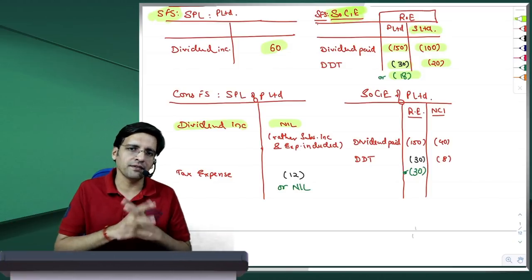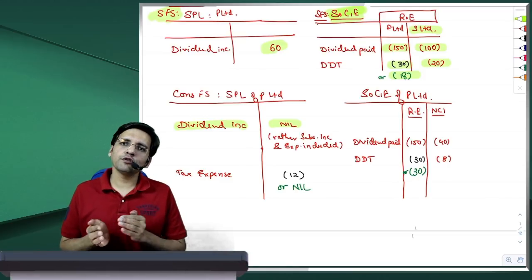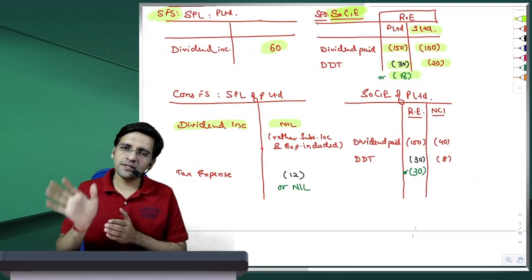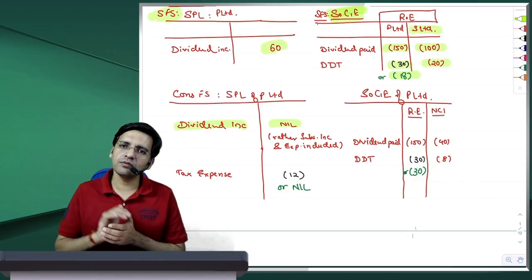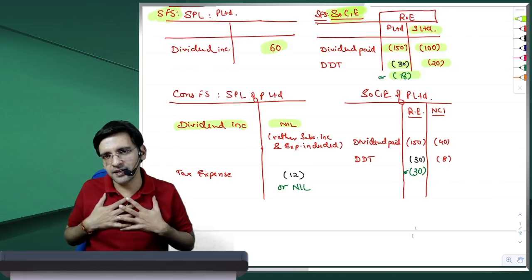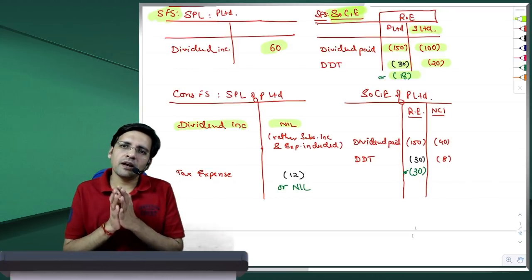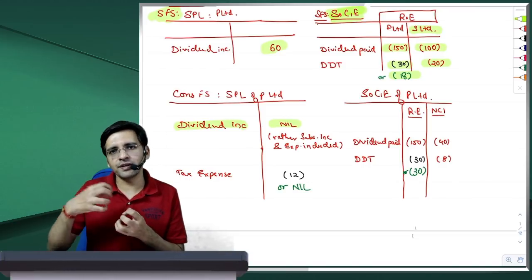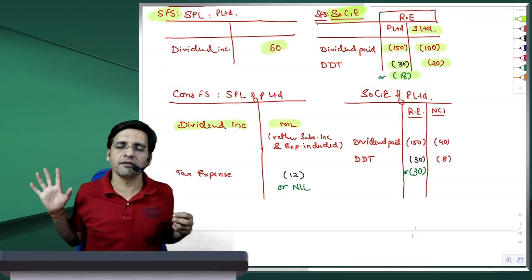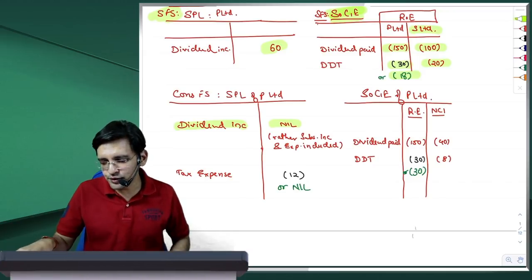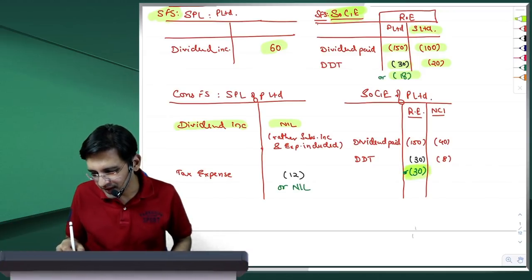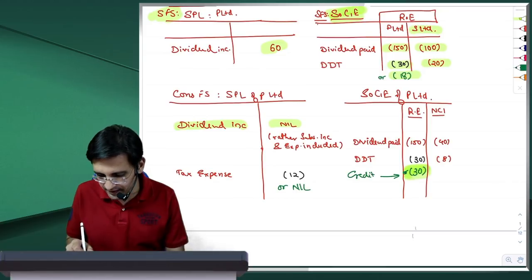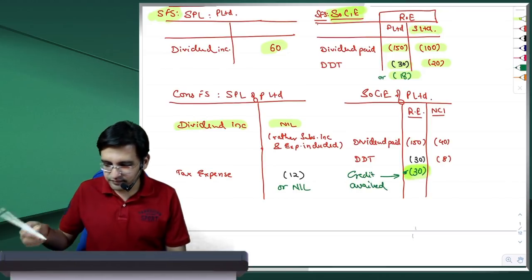Consolidated financial statement mein kya hooga? Dividend income kuch bhi nahi aayegi, kyoki hum subsidiary ke pure profits laate hai, double counting ho jayegi. Ab main important point hai jo discuss karna hai. Subsidiary ne jo dividend bataya hai 100 rupay ka, usmein NCI ka 40% yarni ki 40 rupay ka share, aur iska proportionate DDT 8 rupay hai. Ye her case mein statement of changes in equity mein, NCI ka jo opening value plus share in current year profit minus dividend paid to NCI minus DDT on NCI dividend, ke roop mein hi disclose hooga.